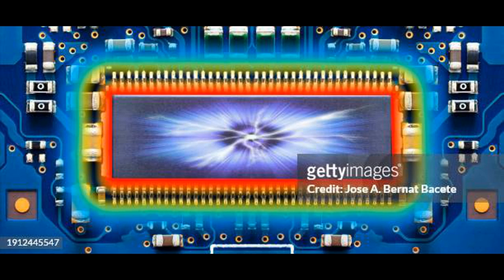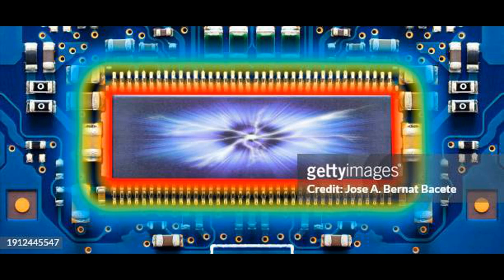Integration of Peripherals. Some chipsets integrate common peripheral interfaces directly onto the chip, such as USB, SATA, Ethernet, audio, and video interfaces. This integration eliminates the need for separate controller chips, reducing component count, board space, and power consumption. Integrated peripherals also simplify system design and assembly, leading to cost savings and improved reliability.